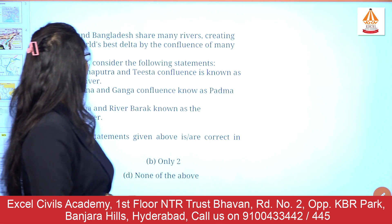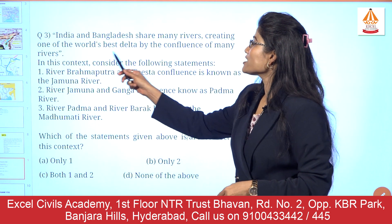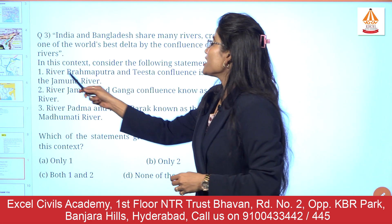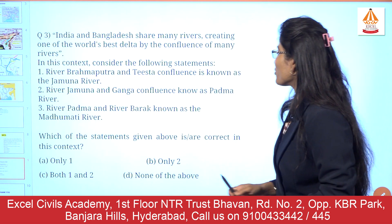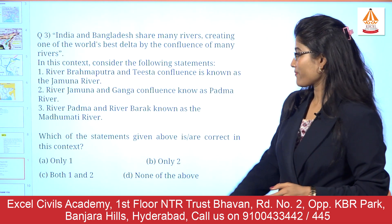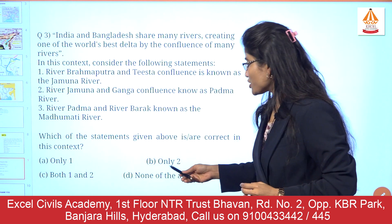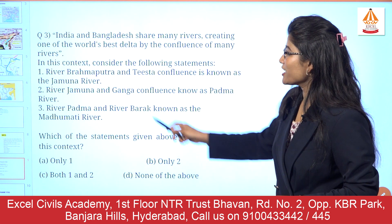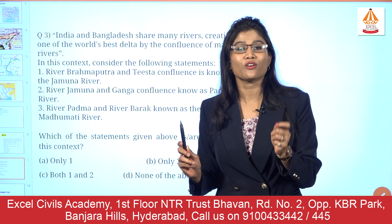The third important question: India and Bangladesh share many rivers, creating one of the world's best deltas by the confluence of many rivers. Consider the following statements — First: the confluence of rivers Brahmaputra and Tista is known as the Jamuna river. Second: the confluence of Jamuna and Ganga is known as the Padma river. Third: the confluence of Padma and Barak is known as the Madhumati river. The corrected options are: A) one and three, B) two and three, C) one, two and three, D) only one. Changes will be made in the video description.